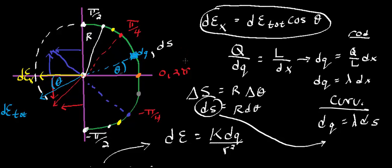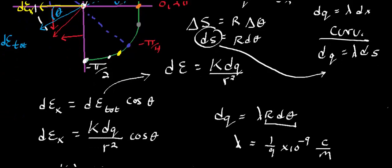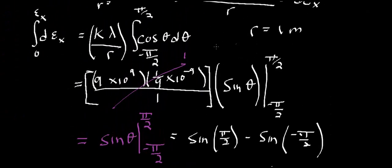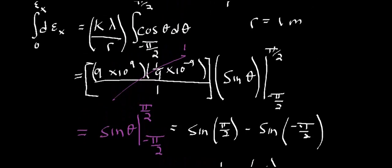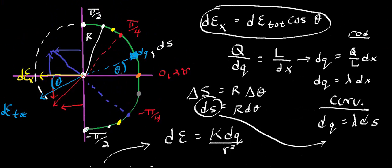That is such an important distinction. You always set up radius-of-curvature problems so the midpoint of the arc length is on the x-axis, so the math works out nicely and you only worry about x-components. In general, unless you have a variable charge density, it always boils down to the integral of cosine of theta d(theta), which is just sine of theta evaluated at the limits. In the next video, we'll do a problem with a variable electric field.